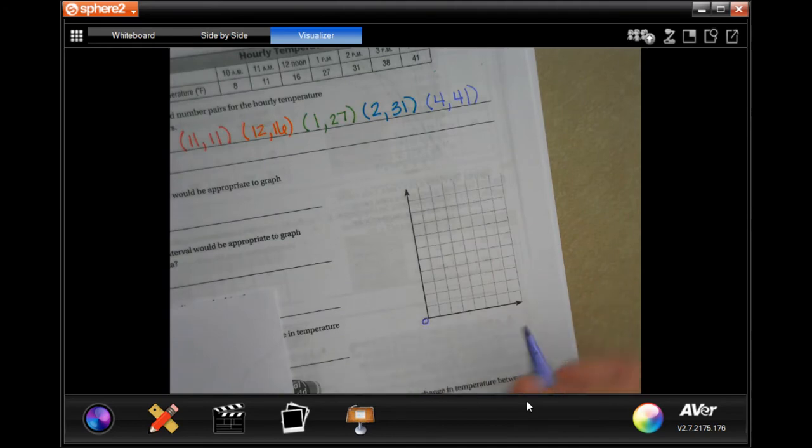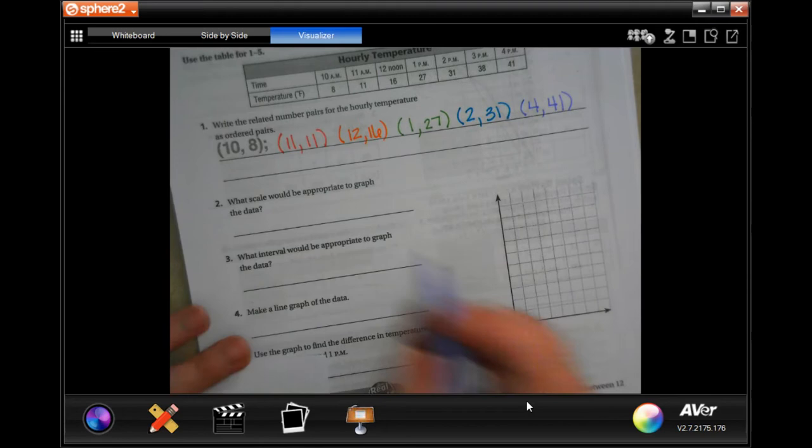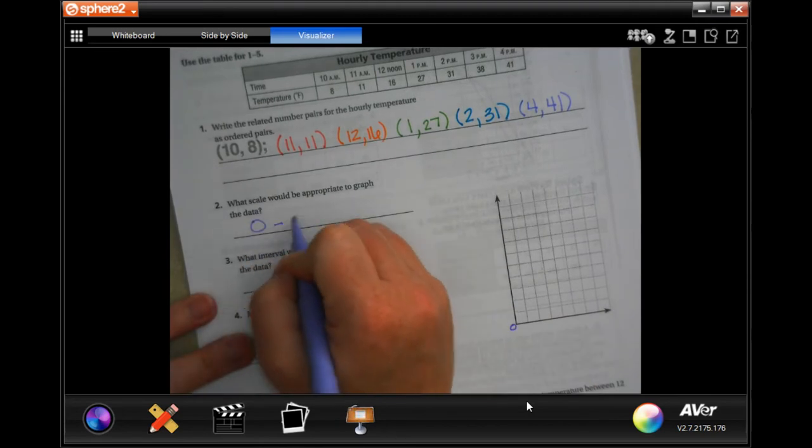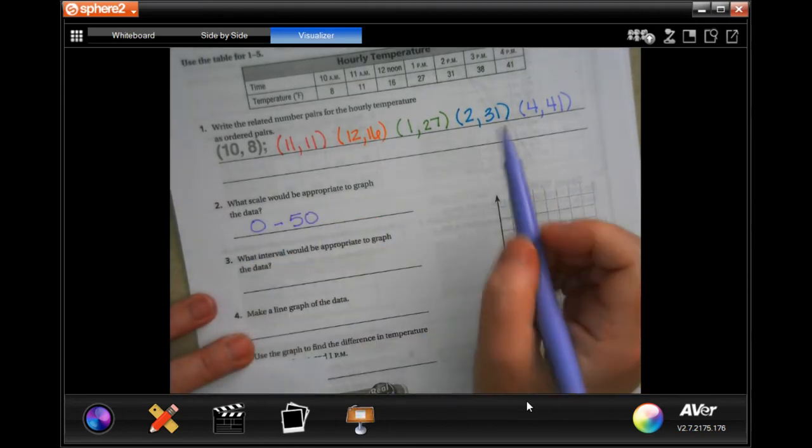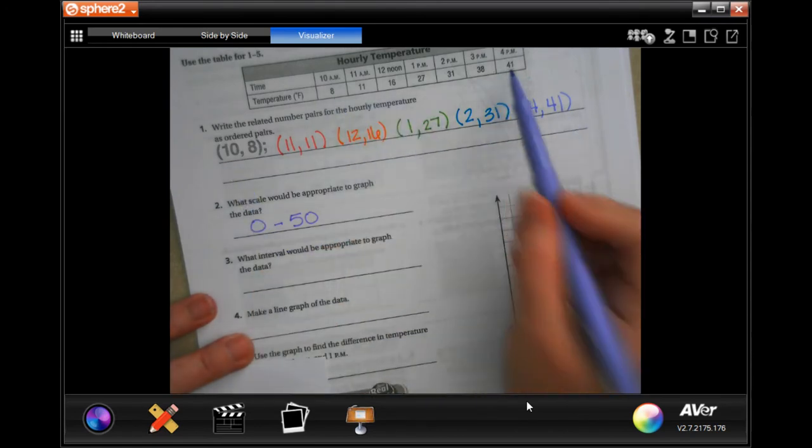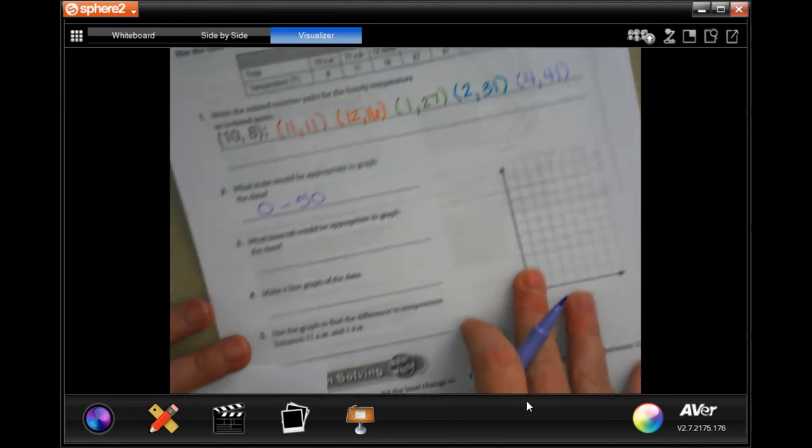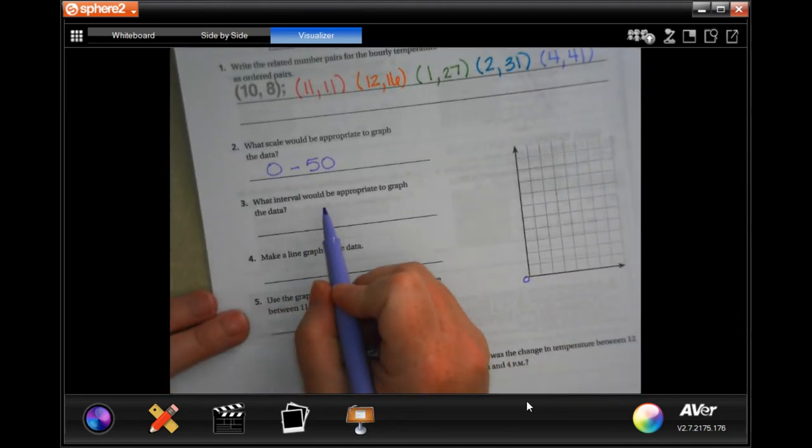Every single scale starts at zero. Every single one, that corner is zero, no matter what. But we could do zero to 50, no problem. So zero to 50 and that would cover from 10, or from 8, all the way to 41. That would encompass all of that. So I would do that.